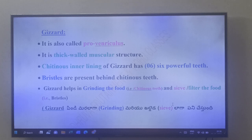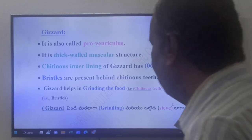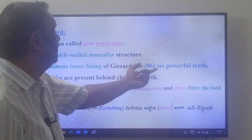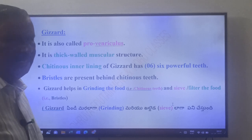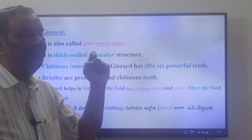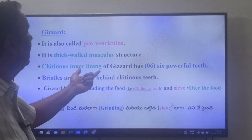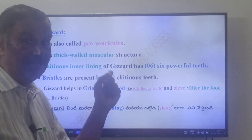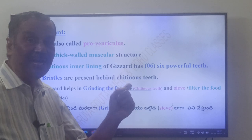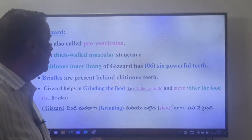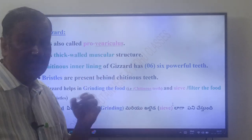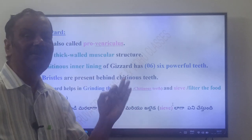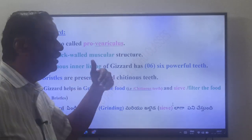The crop is a thin-walled sac-like structure, while the gizzard is a thick-walled muscular structure. The gizzard is internally lined by six powerful chitinous teeth. Those teeth are made up of chitin. Bristles are also present behind the chitinous teeth.